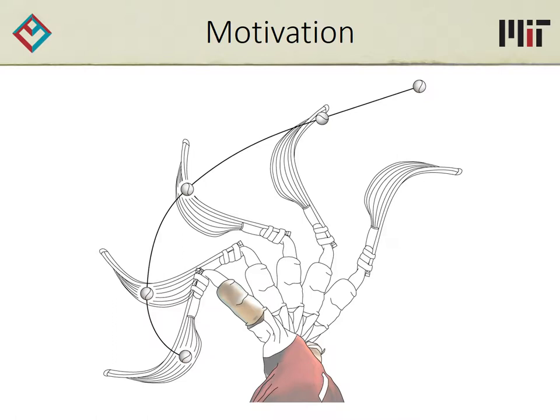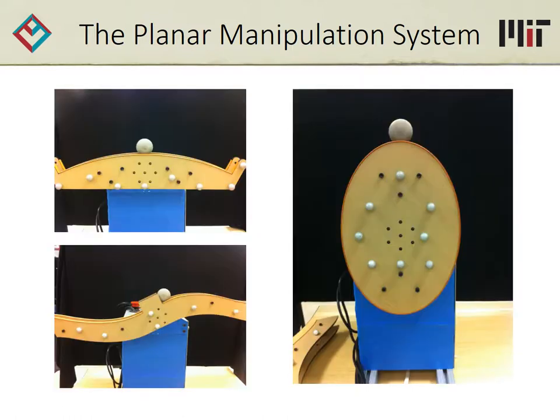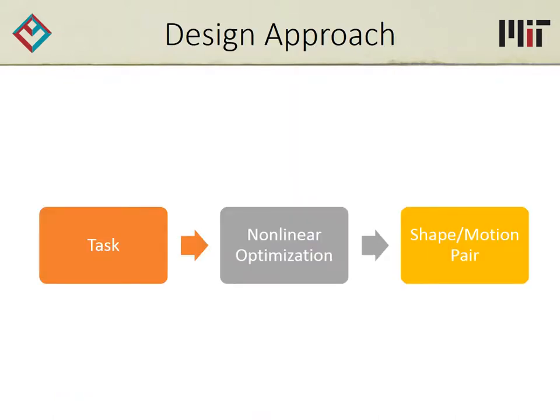Can we combine the design of the two to get better performance? We'll model this as a simple planar manipulation system, which consists of two rigid planar objects and rolling contact — the hand and the ball. Think of it as a ball-beam balance, except you can choose the shape of the beam. Our game plan: we're going to start with a manipulation task, like moving the ball between two points, and convert this into a nonlinear optimization problem whose solution will be an end effector shape-motion pair that accomplishes the task.